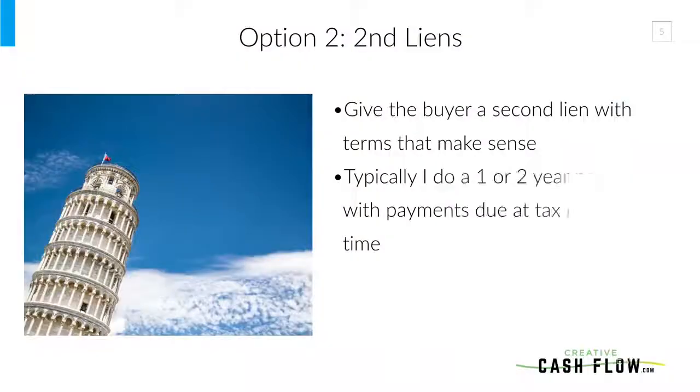Another option is second liens. Give your buyer a second lien with terms that make sense to them. Typically I do basically a one-to-two year payoff with one payment a year, and that payment happens in April or May. That gives your buyer time to file their taxes, get their tax refund, and use that chunk of money to pay what's owed. So if they give you four and you want ten, maybe you say every May for the next two years they owe you $3,000. But you've got to look at their financials and make sure you're setting them up for success, not failure.